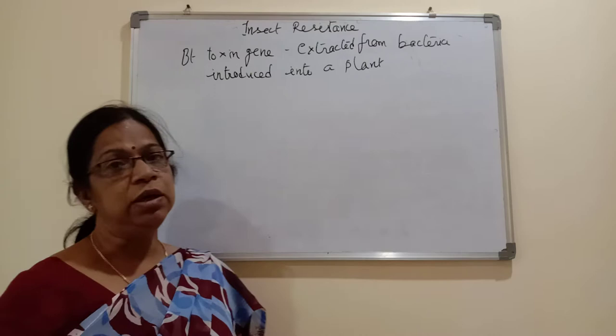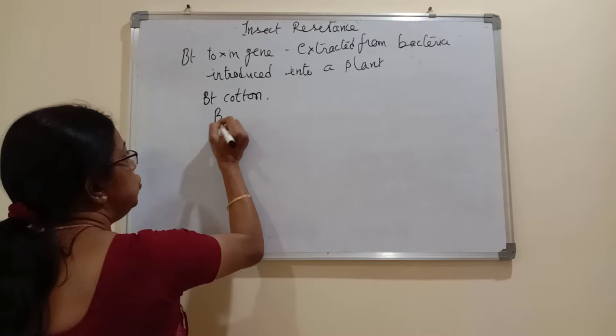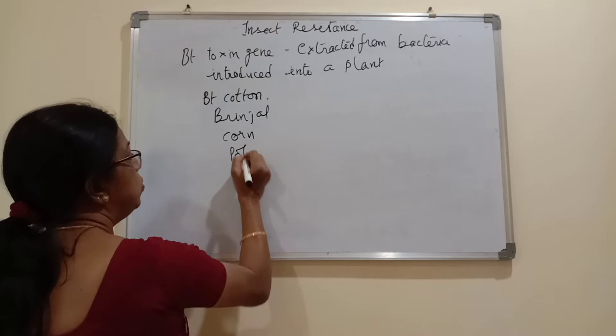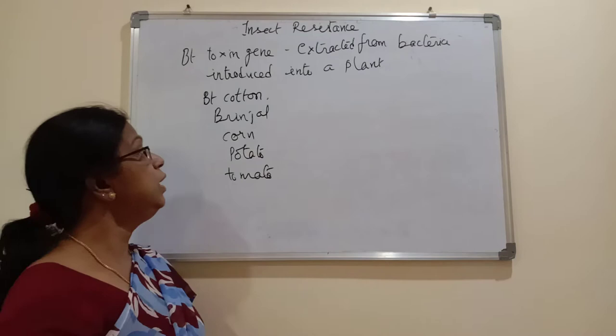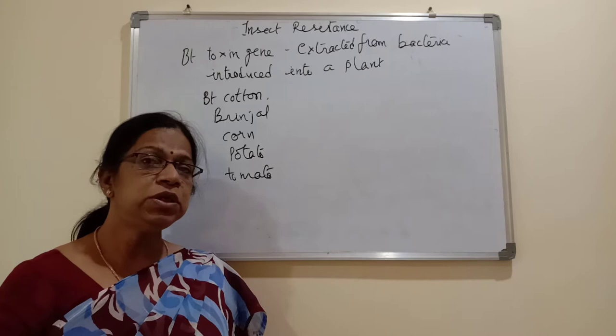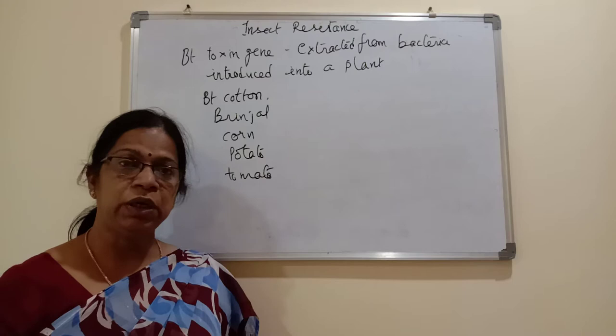Using this Bt toxin gene, many plants have been developed, starting first with cotton — named Bt cotton — and similarly Bt brinjal, Bt corn, potato, and tomato. The most successful is cotton, because the others are edible vegetable plants, and there was an objection raised regarding the safety of the Bt toxin gene for human consumption.